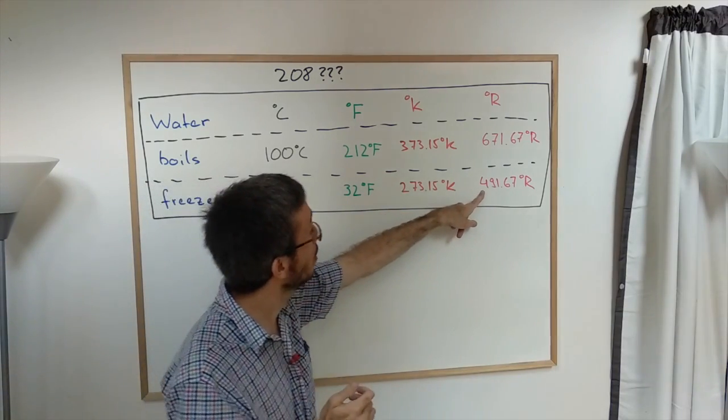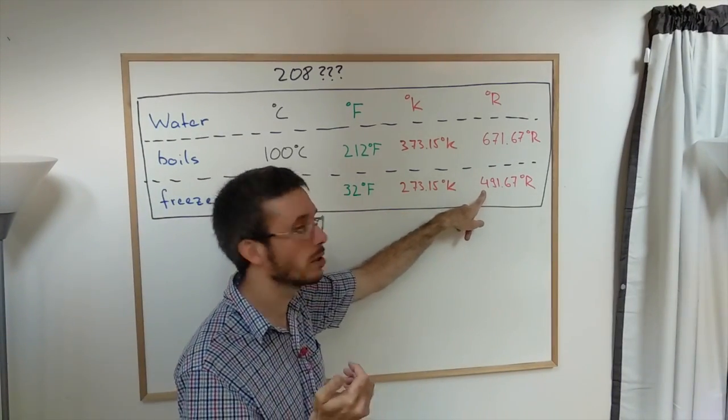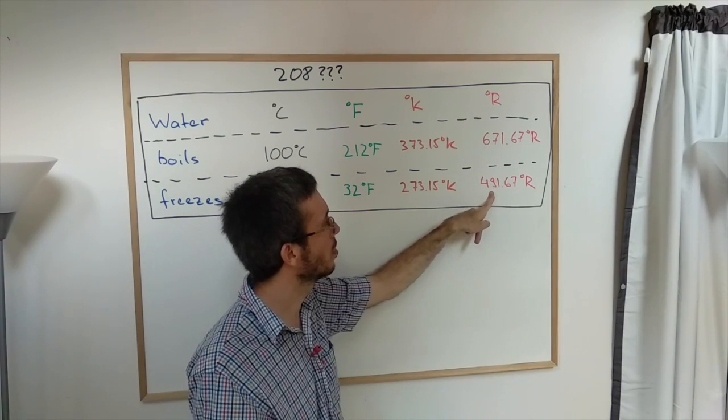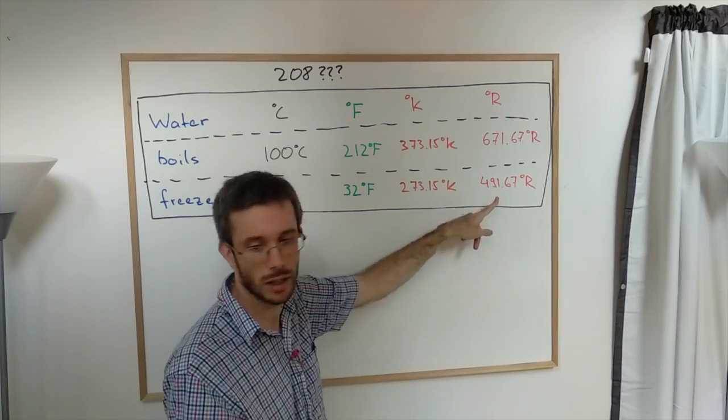Then Rankine: we have boiling at 671 and freezing at 491. Rankine is out.